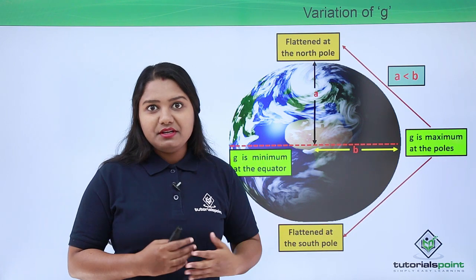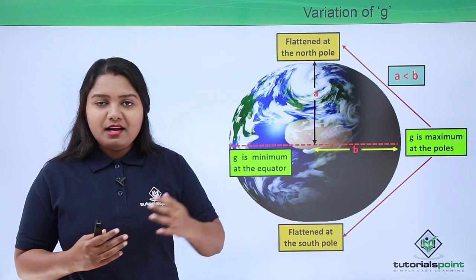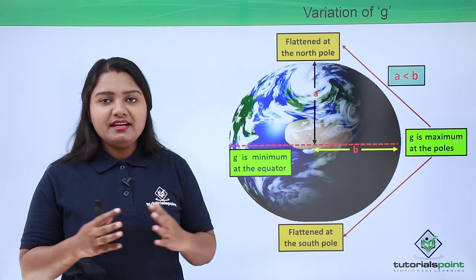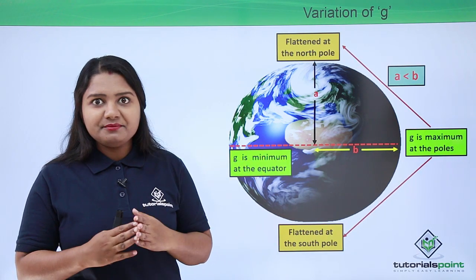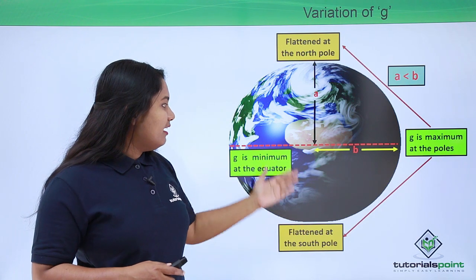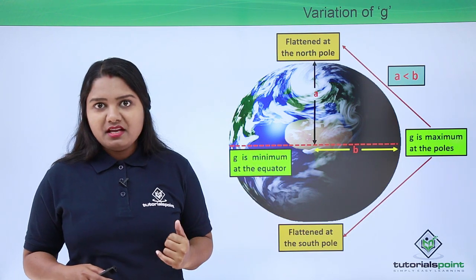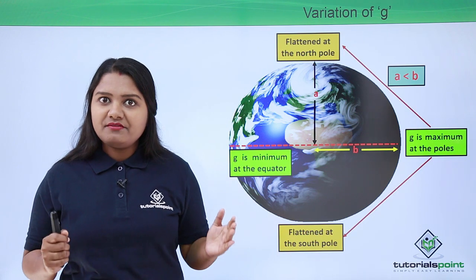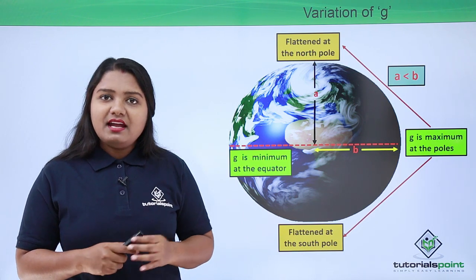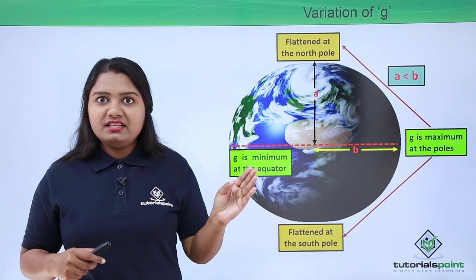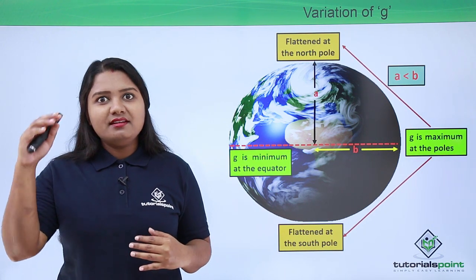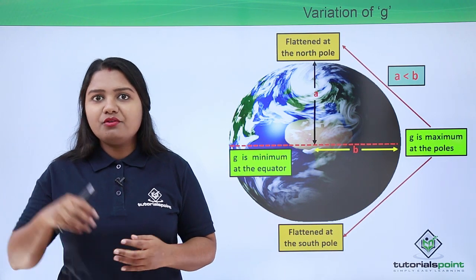This brings us to the end of this video. We have learned about acceleration due to gravity and derived an expression g equals GM over r squared, which can be used to find the acceleration due to gravity for any object. We also found that g is maximum at the poles and minimum at the equator, its value near the surface of the Earth is approximately 9.8 meters per second squared, and it depends on the distance of the object from the center of the Earth.